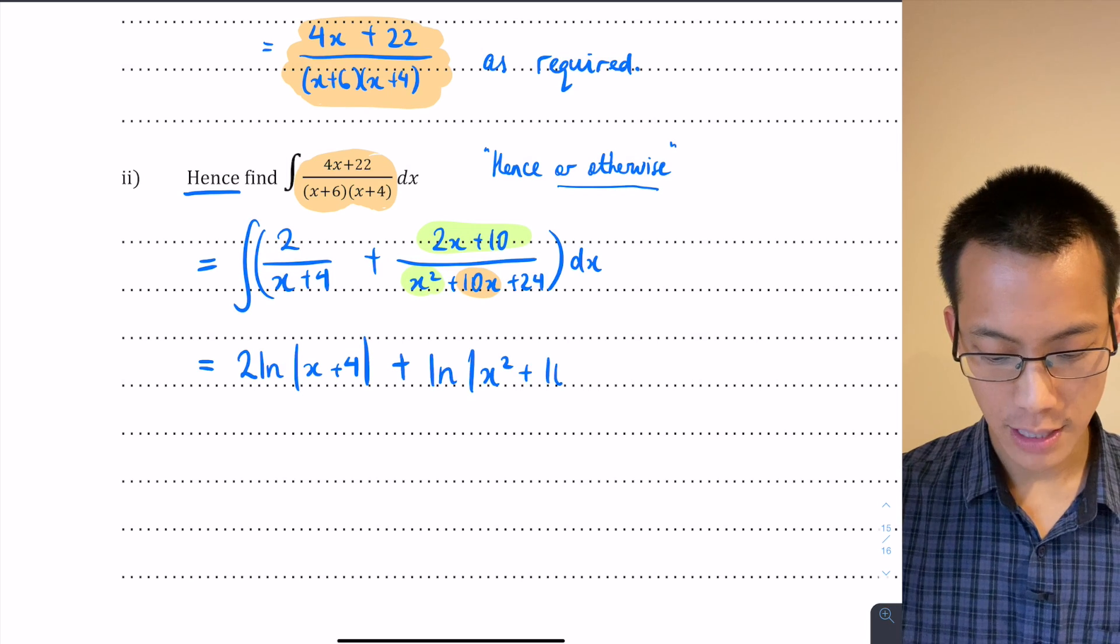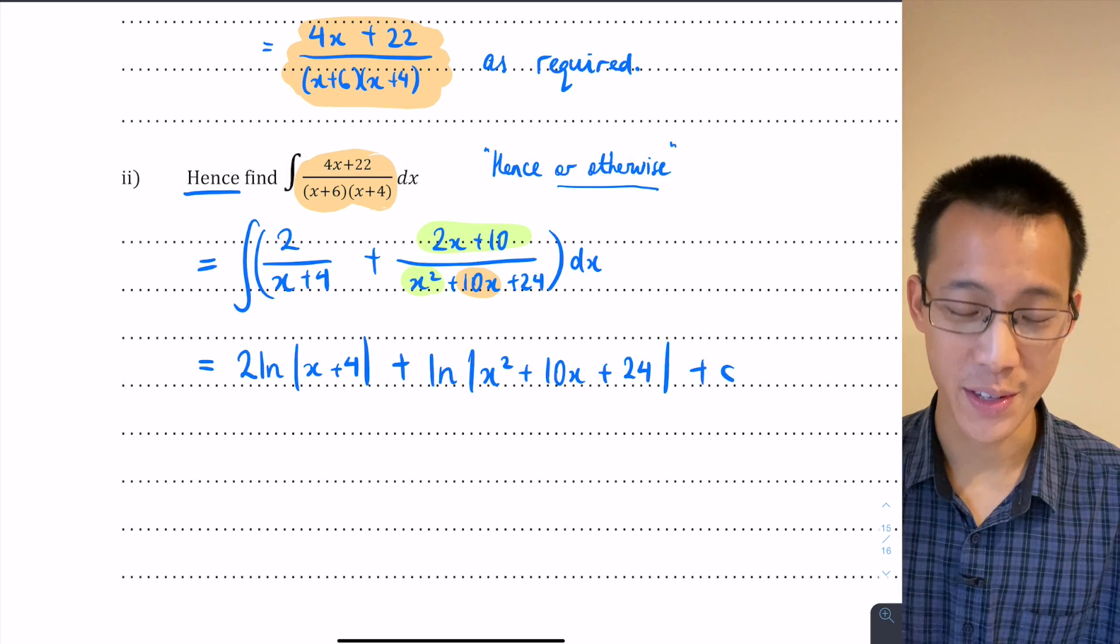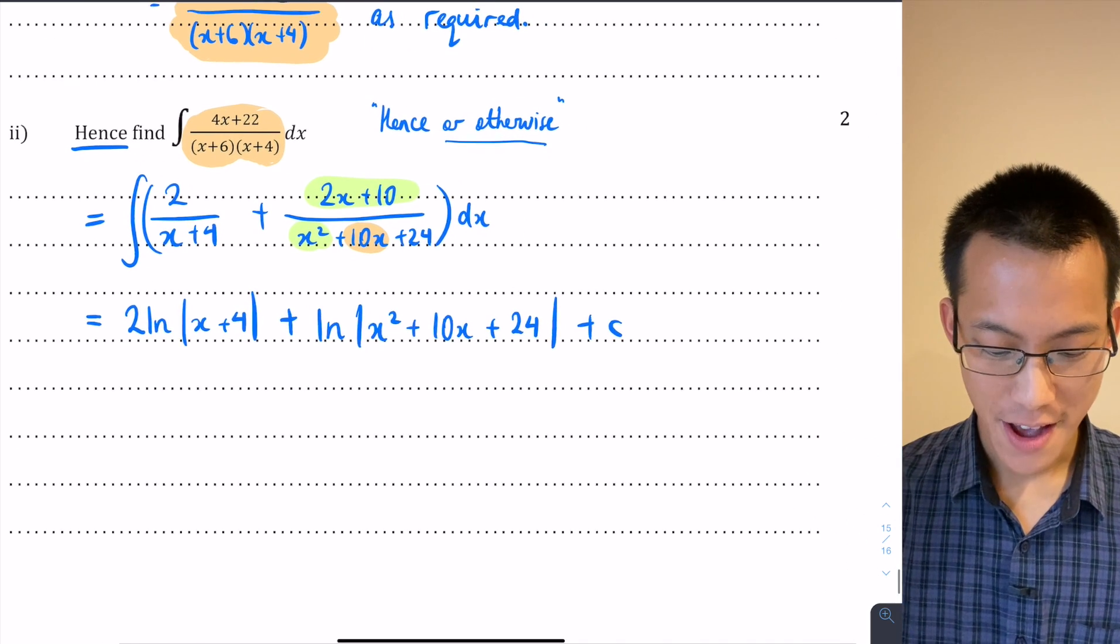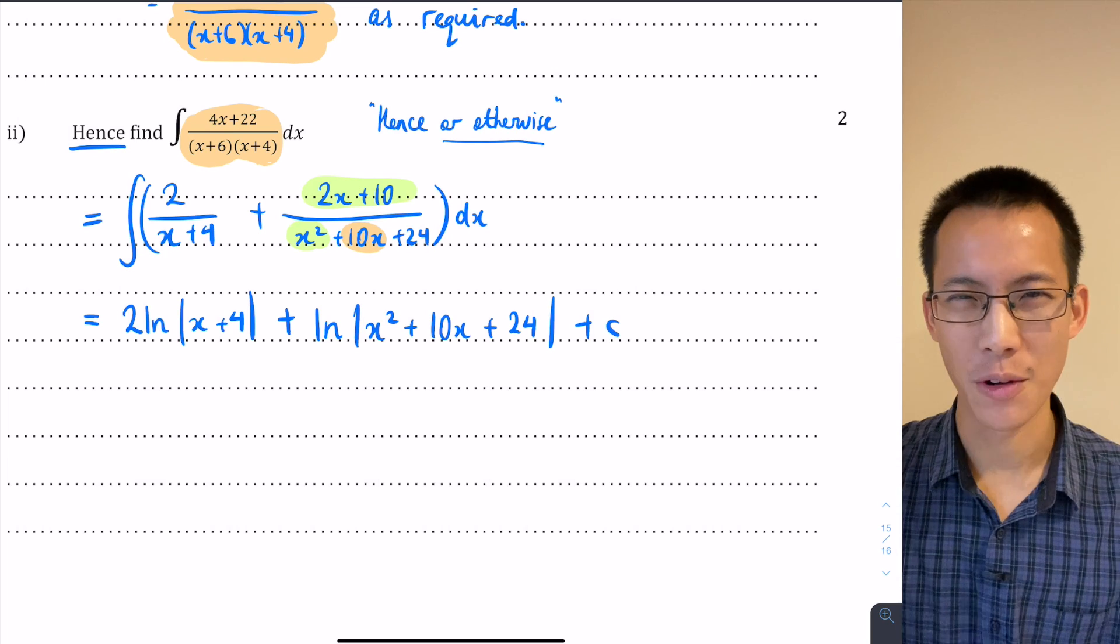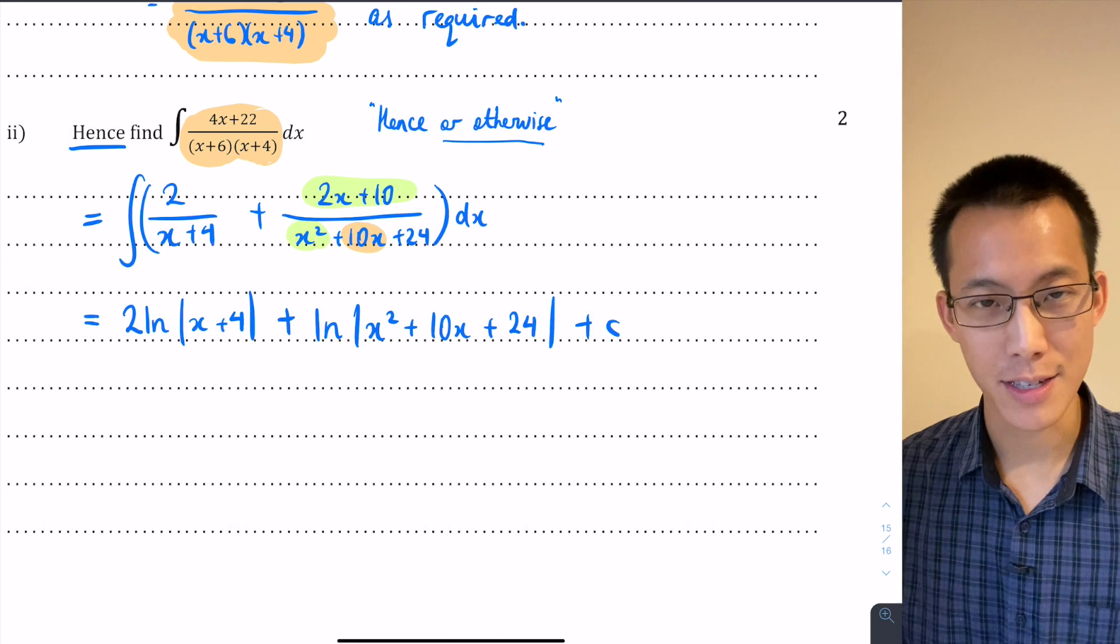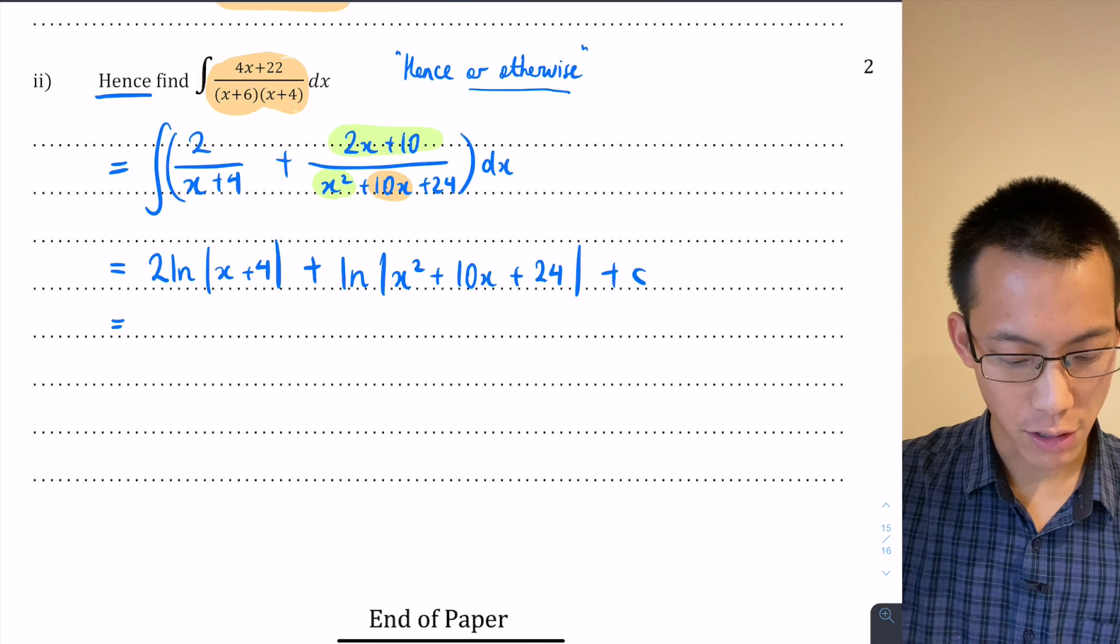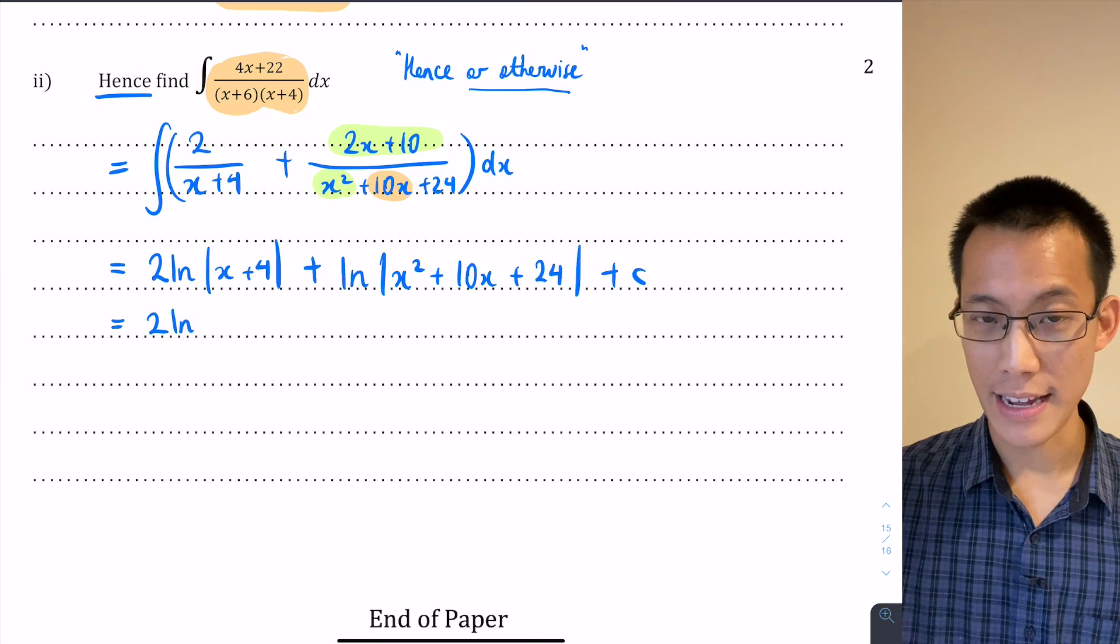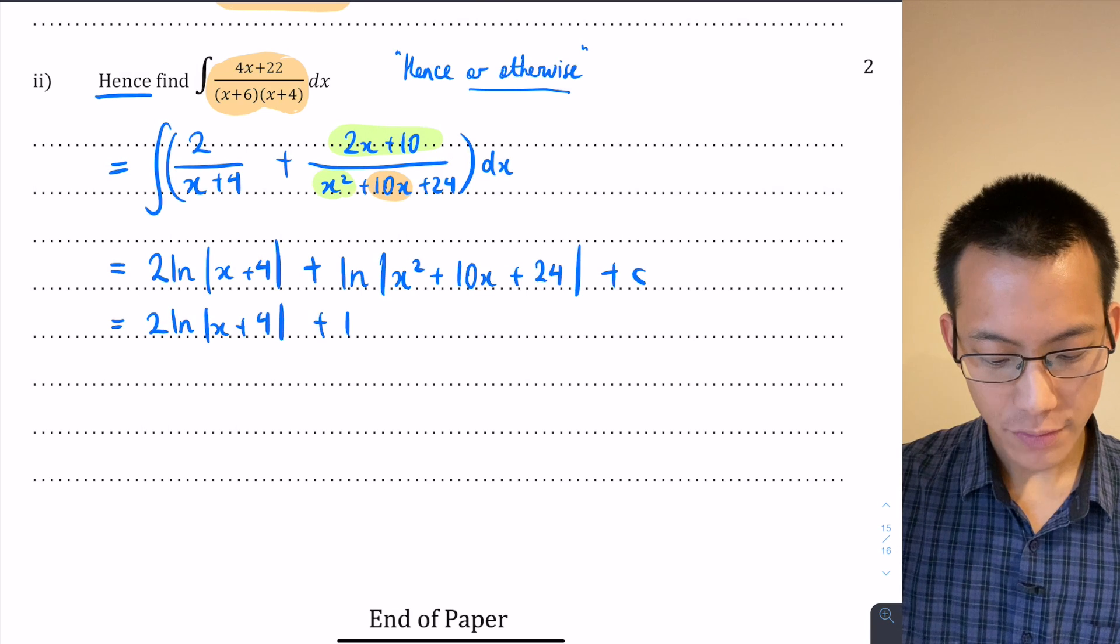And then of course I add my constant of integration. So the whole point of part 1 was actually to write the integral in a way that we could deal with in part 2, and this I think is done. But if you want to simplify this even further, you could use one of the log laws that we've seen earlier on in the paper. By taking this right hand log, which is log of x² + 10x + 24, which I've already written, I can write that as log of (x+4)(x+6).